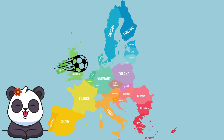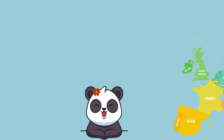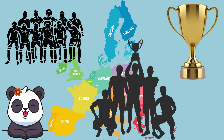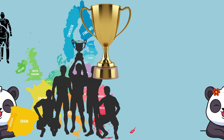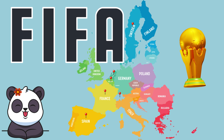By the early 20th century, football had spread across Europe, but it needed international organization. A solution was found in 1904 when representatives from the football associations of Belgium, Denmark, France, the Netherlands, Spain, Sweden, and Switzerland founded the Federation International Football Association, also known as FIFA.